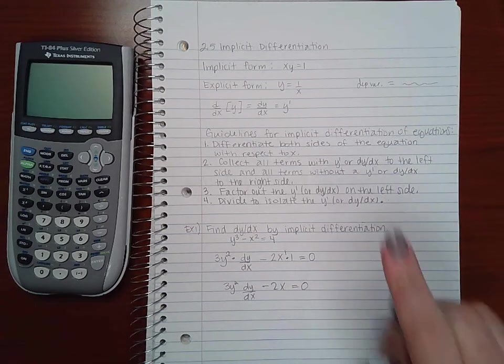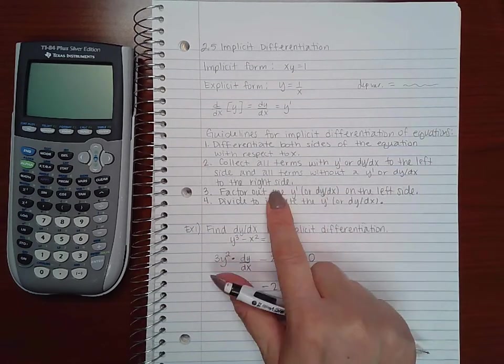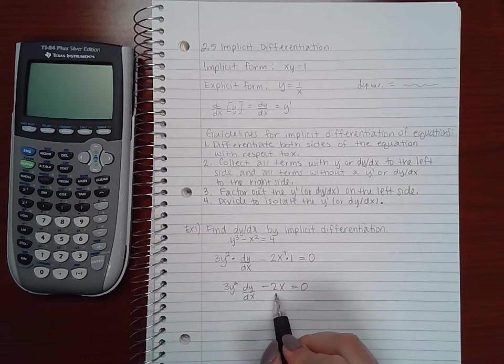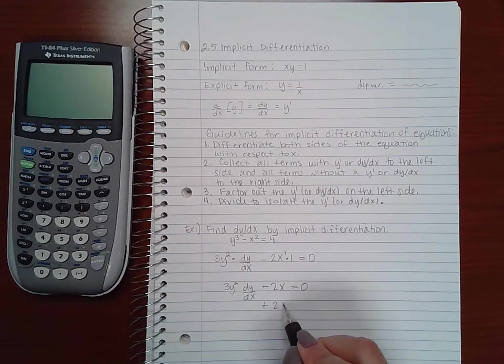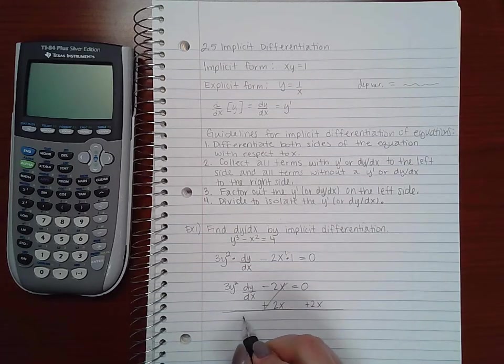Now I'm going to collect all the terms with dy/dx to the left and all the terms without dy/dx to the right. So this term here will need to move to the right side, and I will move it by adding 2x to both sides of my equation.